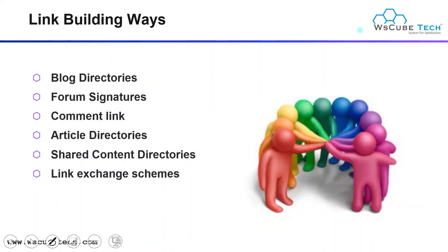There are several ways of doing link building, such as blog directories, forum signatures, comment links, article directories, sharing your content in directories, and link exchange schemes. These are the different methods of doing link building. We have a complete module on off-page SEO where we will practically learn what these ways are and how we can perform off-page SEO activities using them.